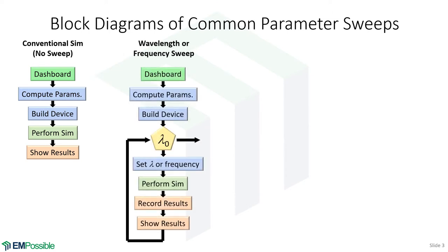The most common parameter sweep is a wavelength or frequency sweep — plotting reflection and transmission as a function of wavelength. The block diagram remains much the same, except we wrap a loop around part of it. We still have our dashboard and still compute some intermediate parameters. We build our device before the loop, because the device doesn't change. Inside the loop, we select a new wavelength, perform the simulation, record those results so we can plot them later, and optionally plot them as they go. When the sweep is done, we exit the loop and post-process.